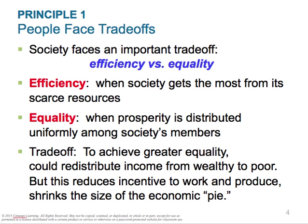You're basically maximizing your output given your inputs. Equality is when prosperity is distributed uniformly among society's members. There's a trade-off between these two. To achieve greater equality, you could redistribute income from the wealthy to the poor, but this reduces the incentive to work and produce and shrinks the size of the overall economic pie. When you promote equality over efficiency, you disincentivize hard work.